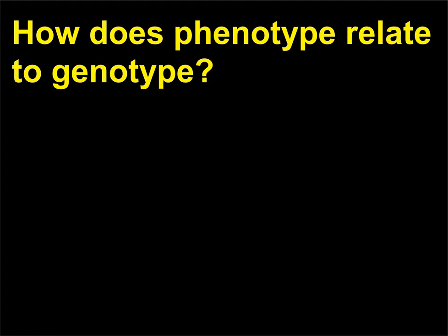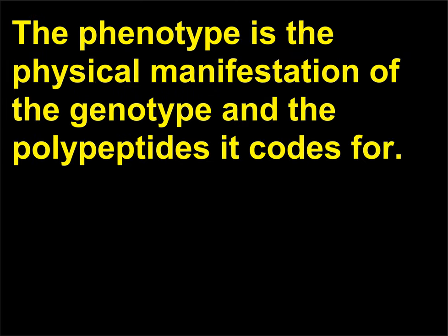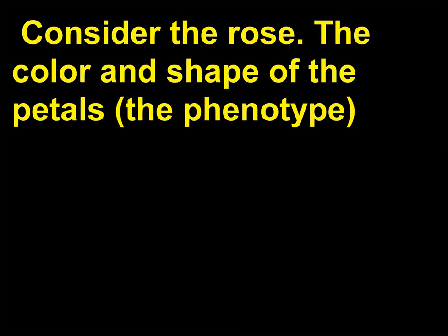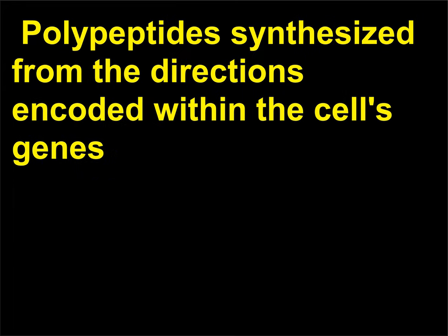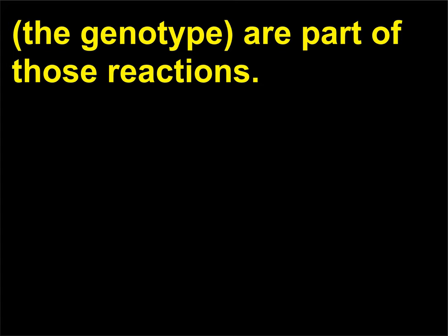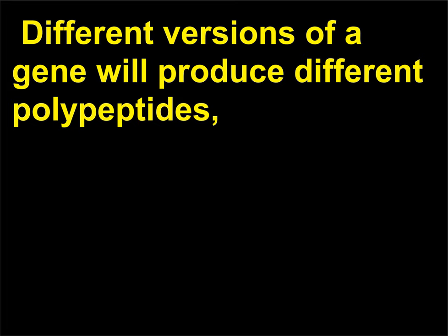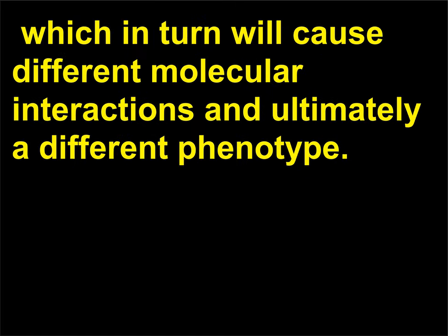How does phenotype relate to genotype? The phenotype — consider the rose: the color and shape of the petals — is the result of chemical reactions within the cells of each petal. Polypeptides synthesized from the directions encoded within the cells' genes, the genotype, are part of those reactions. Different versions of a gene will produce different polypeptides, which in turn will cause different molecular interactions and ultimately a different phenotype.